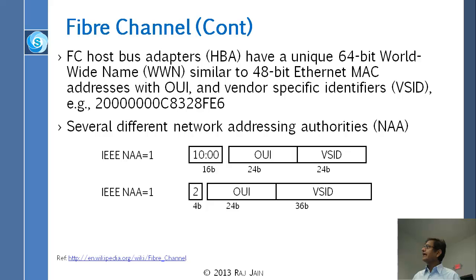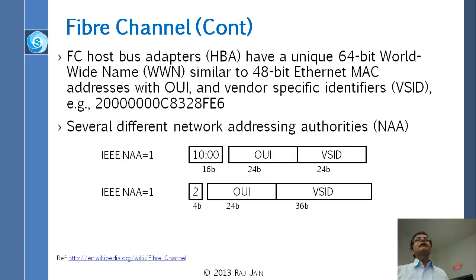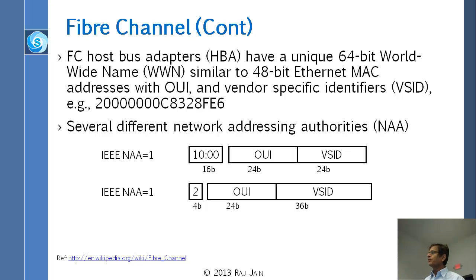The host adapter has a 64-bit worldwide name. Ethernet computers and devices have a 48-bit worldwide unique name — that is called MAC address, and it is globally unique. But for Fiber Channel, they were not happy with 48 bits, so they added 16 more bits to it, making a total of 48 plus 16 — 64 bits.